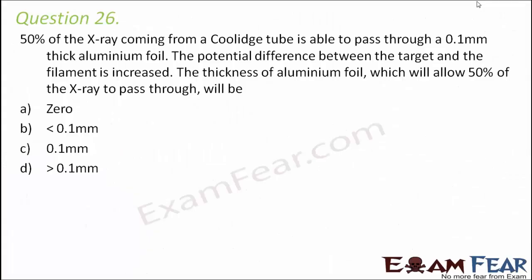Question number 26. 50% of the x-rays coming from a Coolidge tube are able to pass through a 0.1 mm thick aluminum foil. The potential difference between the target and the filament is increased. The thickness of aluminum foil which will allow 50% of the x-rays to pass through will be? First of all, we will understand the x-rays produced in the Coolidge tube.